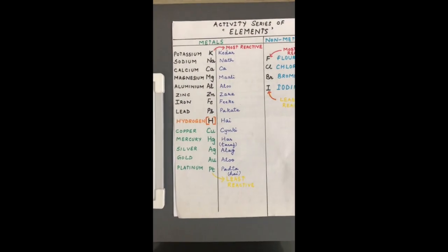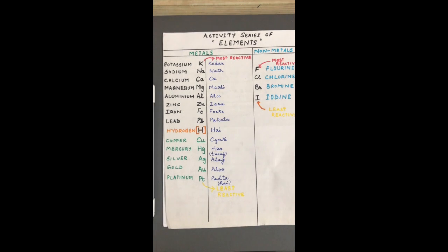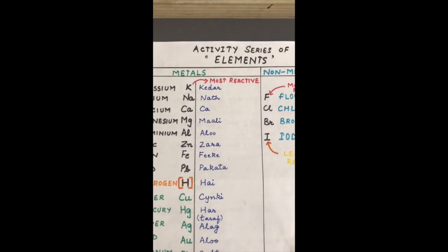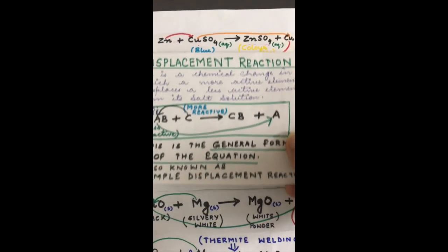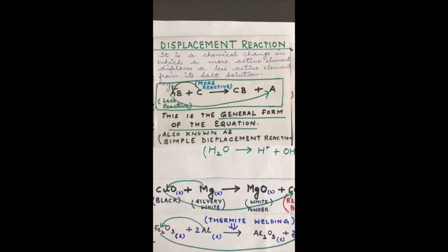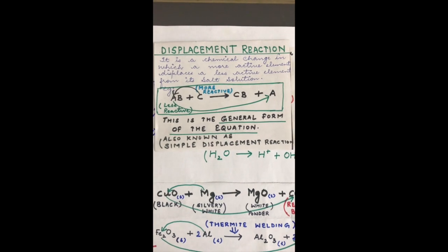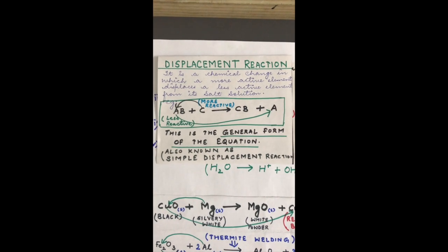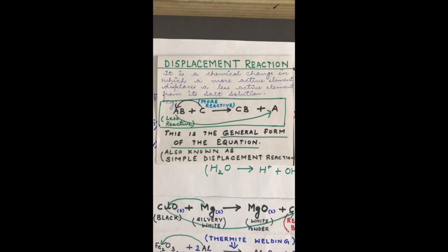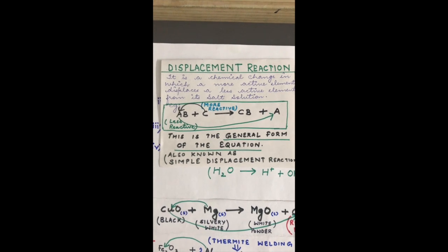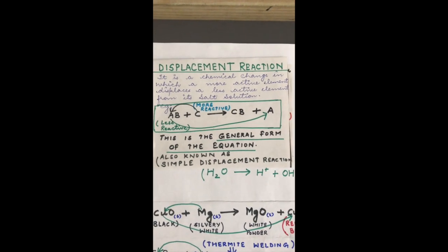Just like all other metals in the activity series, hydrogen also has a tendency to lose electrons, which is why it has been included in the activity series. Now let us move to what is meant by a displacement reaction. A displacement reaction is a chemical change in which a more reactive element displaces a less reactive element from its salt solution. If we have a salt solution AB and it is made to react with C, which is a more reactive element, while A is less reactive.